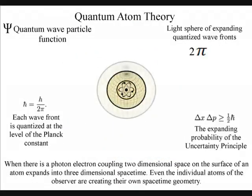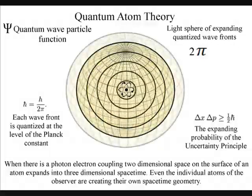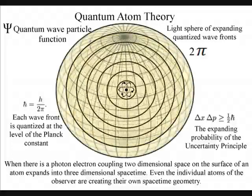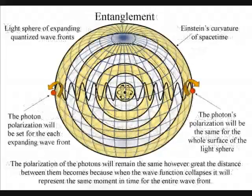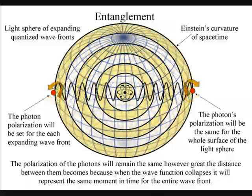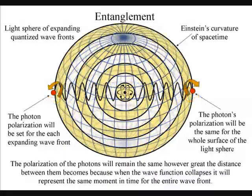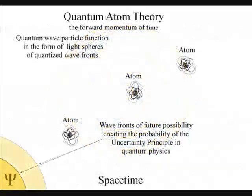Light will always take the simplest and most efficient path, expanding out in all directions, forming light spheres of electromagnetic radiation. The polarisation of the light will be the same for the entire surface of the light sphere, creating quantum entanglement and the symmetry and geometry of space-time.